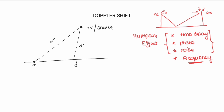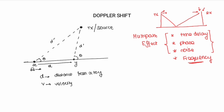Now I am going to assume the angle of incidence at X and Y is the same. D is the distance between X and Y. V is the velocity — the speed at which the receiver travels, for example like a car. Theta is the angle of incidence, assumed to be the same at X and Y. The path difference del L is defined as D double-dash minus D dash.